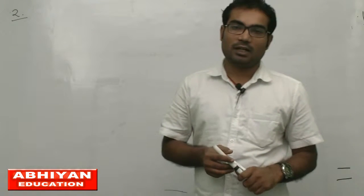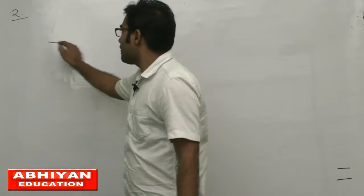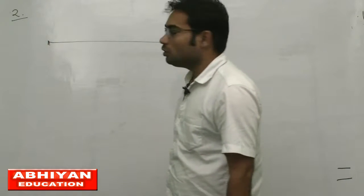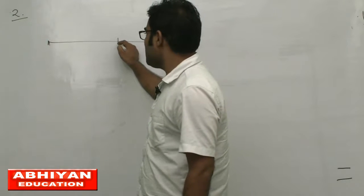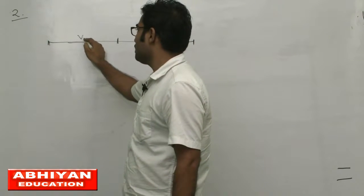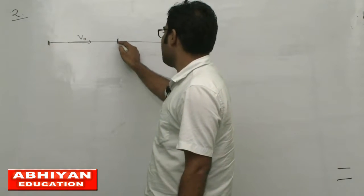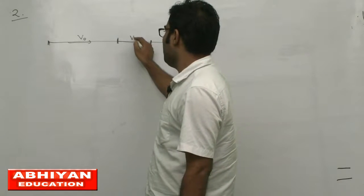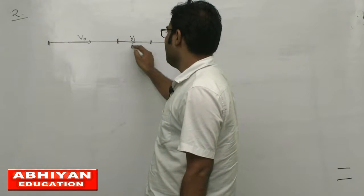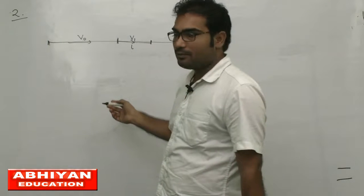This problem says that a point travels half the distance with velocity v0 and the remaining distance with velocity v1 and v2 for half the time each. Means here to here the motion was for time t1.